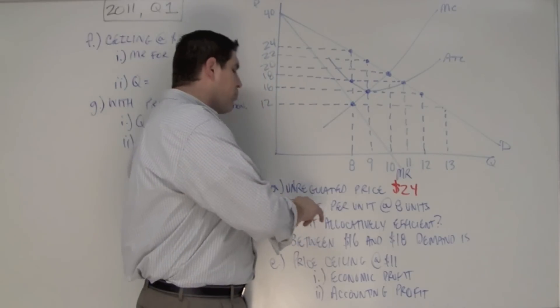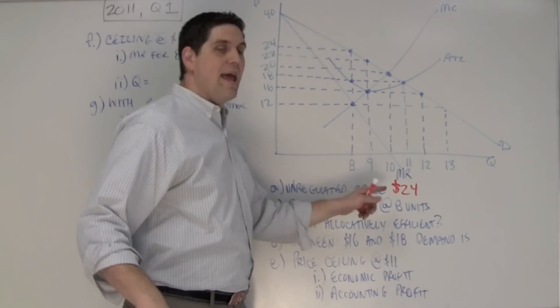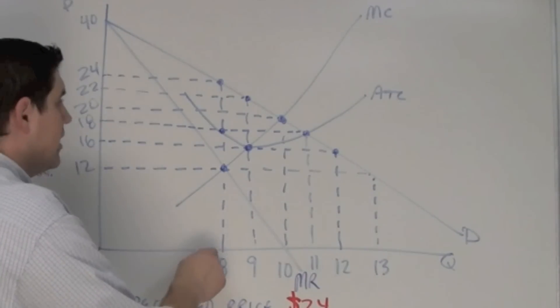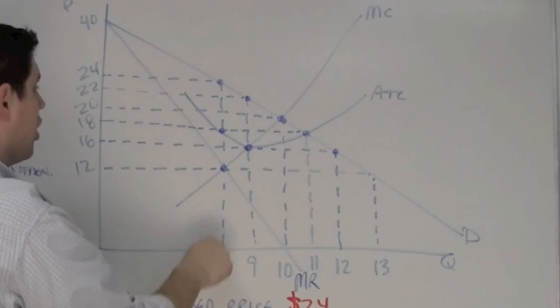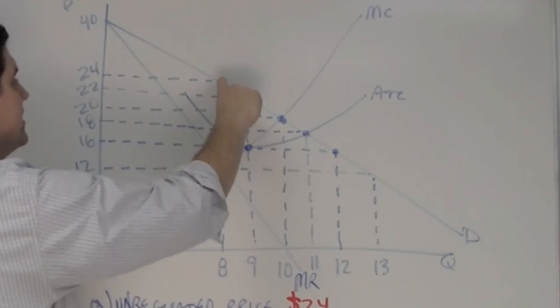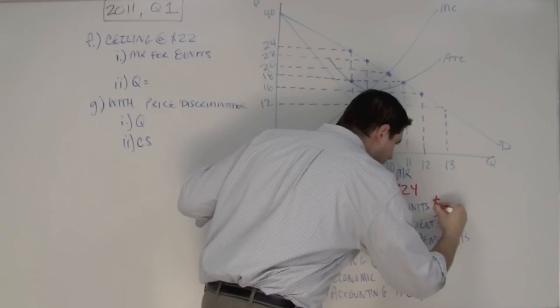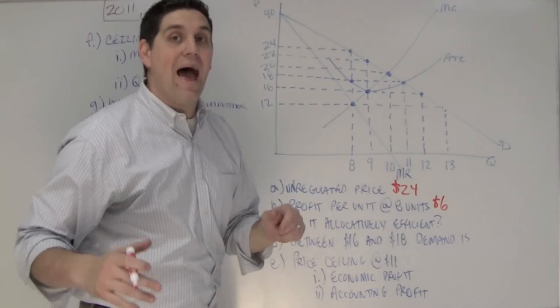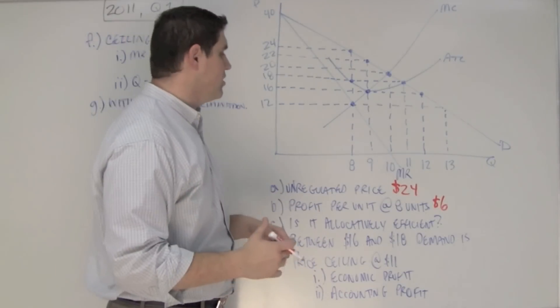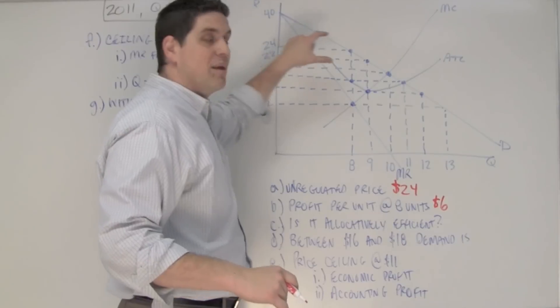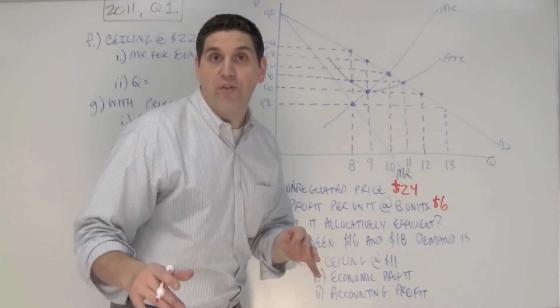Now the next question asks the profit per unit at 8 units. So at 8 units, the price is $24, and the average total cost of 8 units is $18, so the distance between 6 is the profit per unit. That's the first time they ask a profit per unit question for free responses. Normally they ask you to multiply that out times the quantity to get the box of profit. Make sure you can do both of those, total box of profit and the profit per unit.